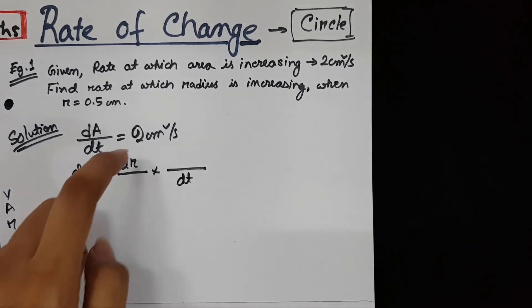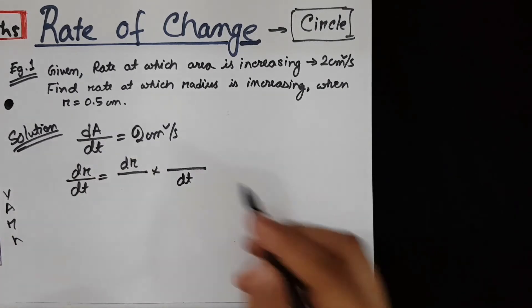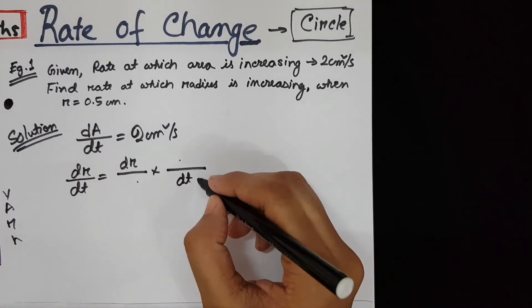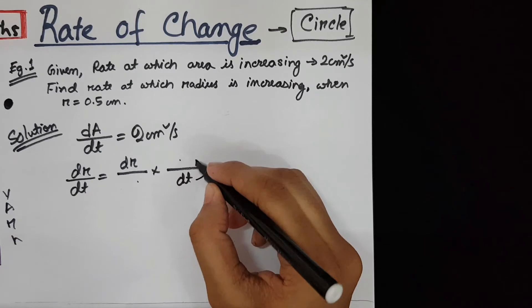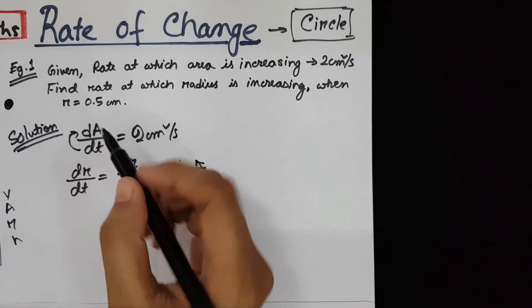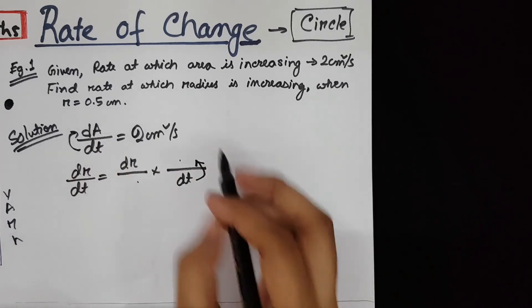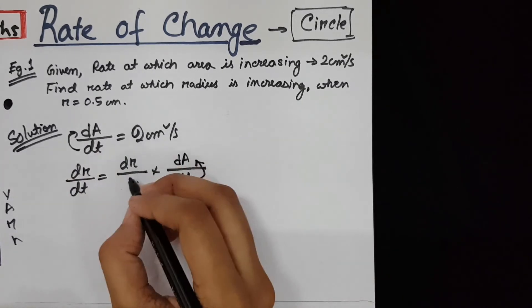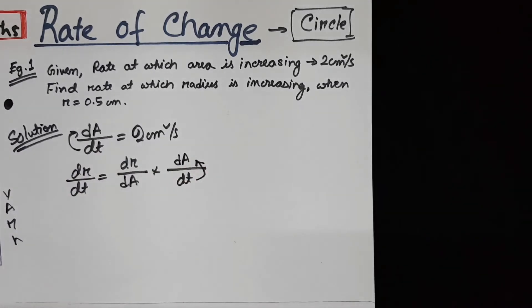So after writing these two terms, you need to fill up these two spaces, right? So just find out what do you know above dt. We know dt with respect to area. That is, this portion and this portion has to be filled by area.